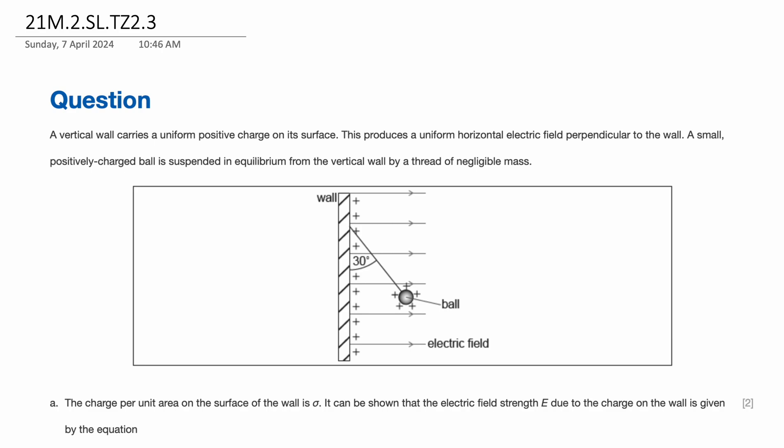Hello everyone, this is your Tutor AB and today we're going to be solving a problem from the IB Physics May examinations. This is a paper 2 SL question and it's open ended. A vertical wall carries a uniform positive charge on its surface. This produces a uniform horizontal electric field perpendicular to the wall.